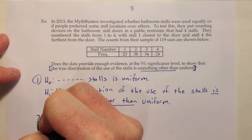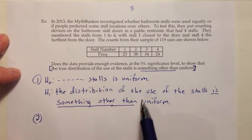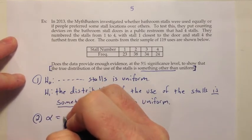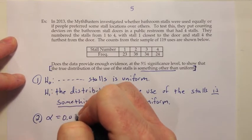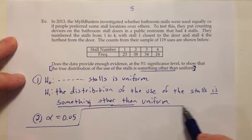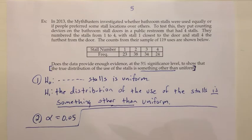And then step two would be to decide on a significance level, and they said we're going to do this test at the 5% significance level. So I would write down that alpha is 0.05. And that finishes the setup phase of the hypothesis test. At this point, we'd want to start into our test statistic.